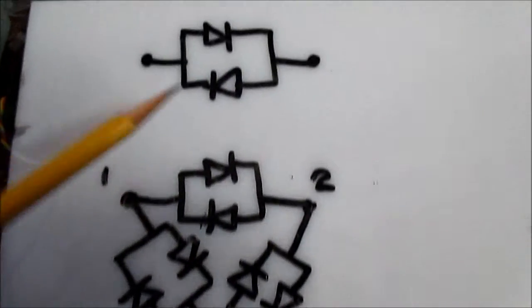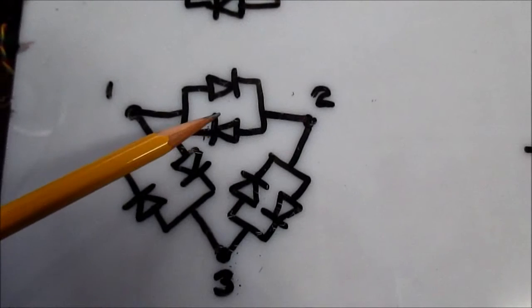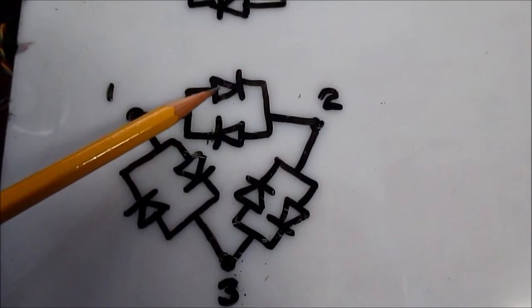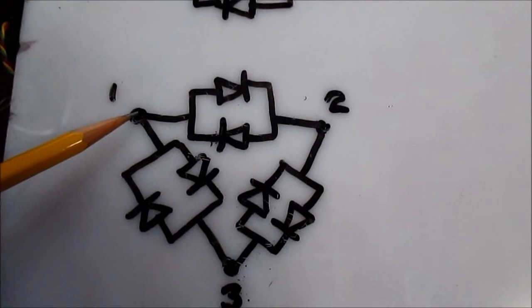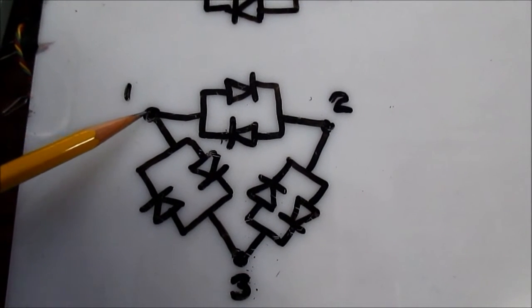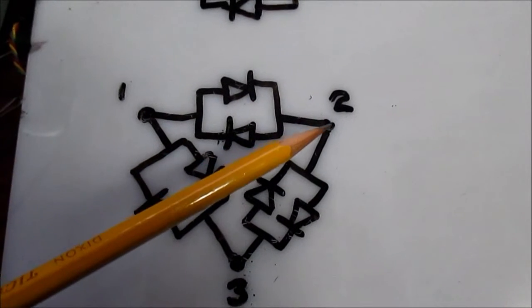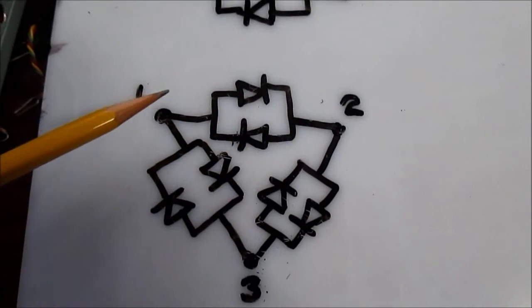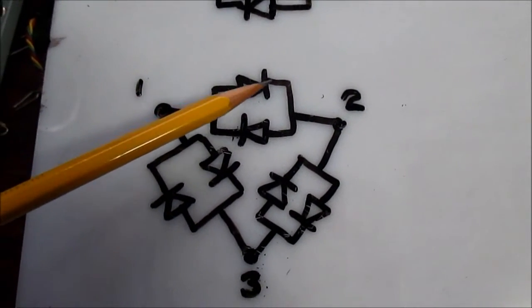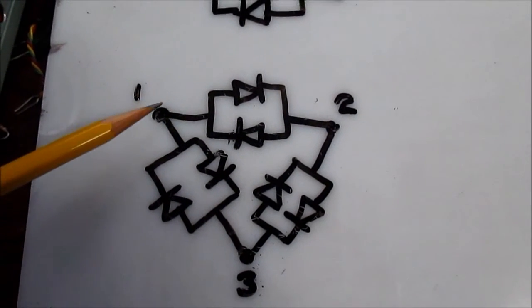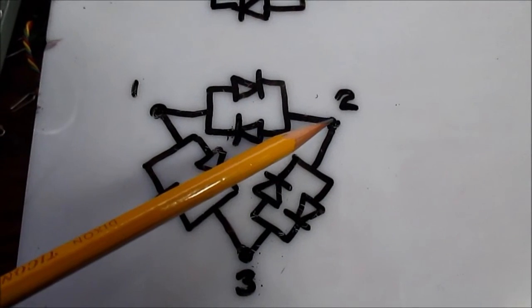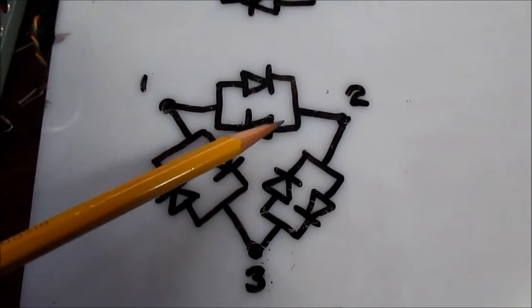And like this example, let's say we want to turn these two LEDs on and off here. Well, in the first case, we can have this node high, node two low, and current will flow and turn this upper LED on. If we reversed it and made this high and this one low, current will flow this way.